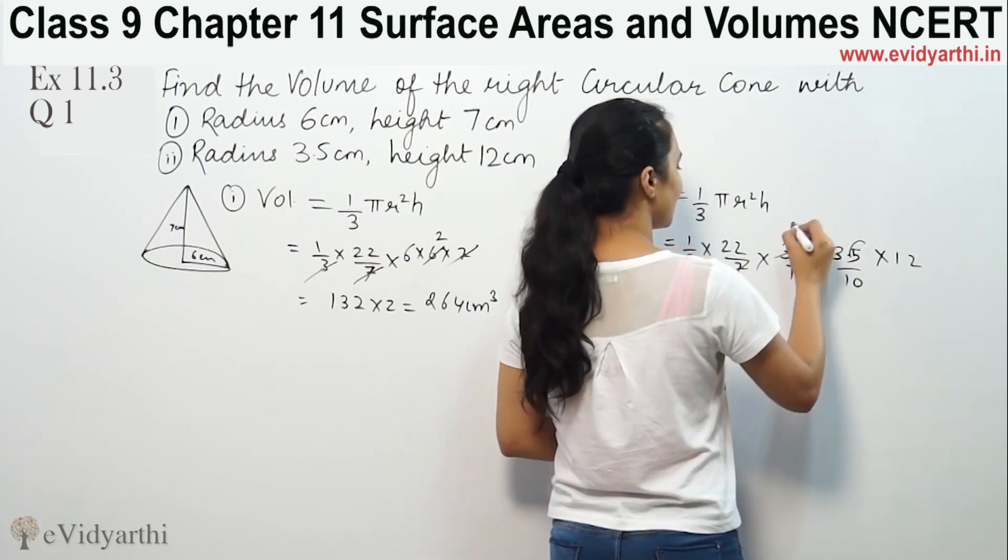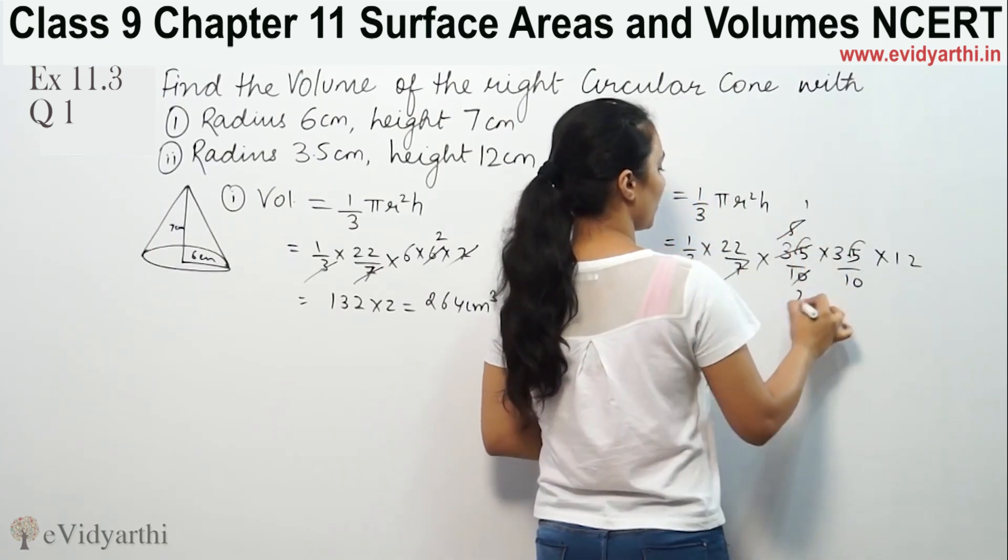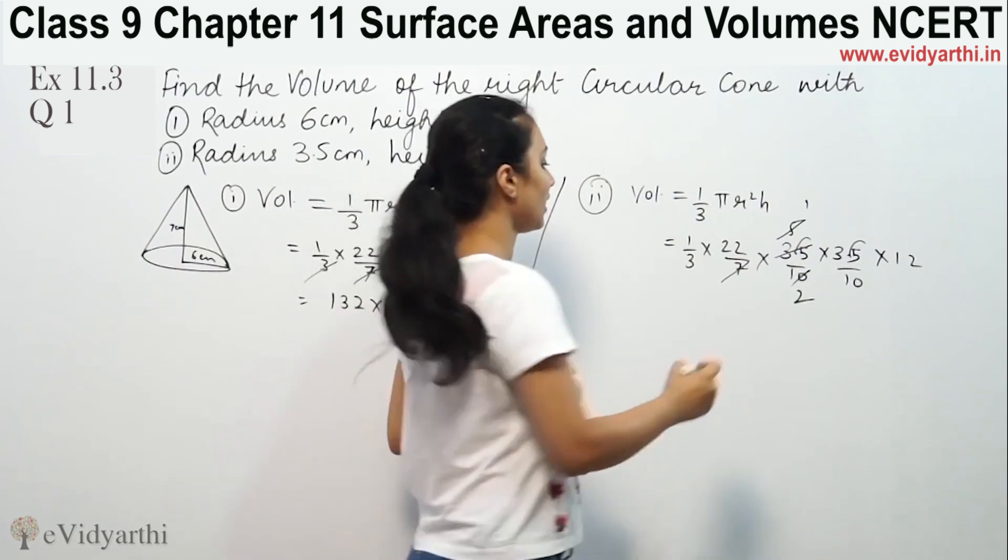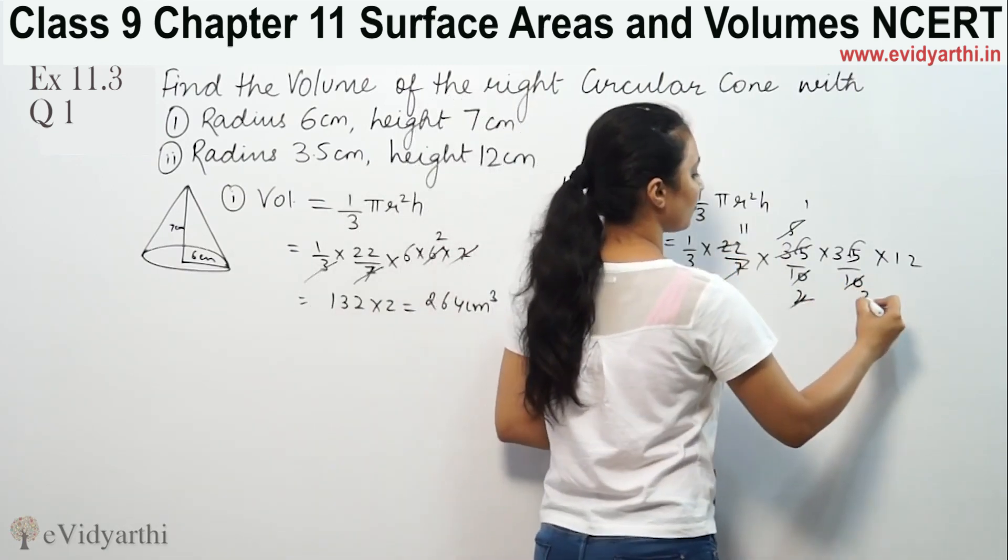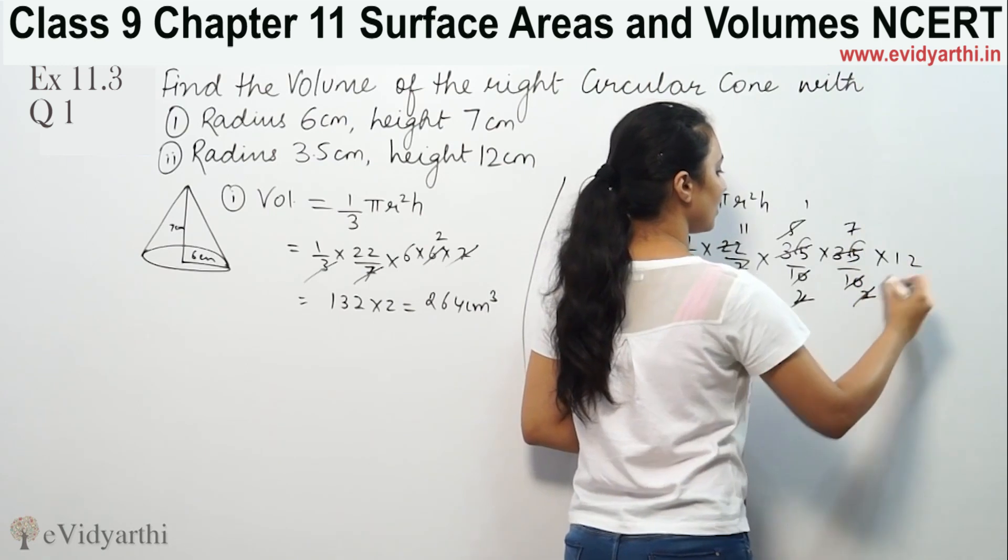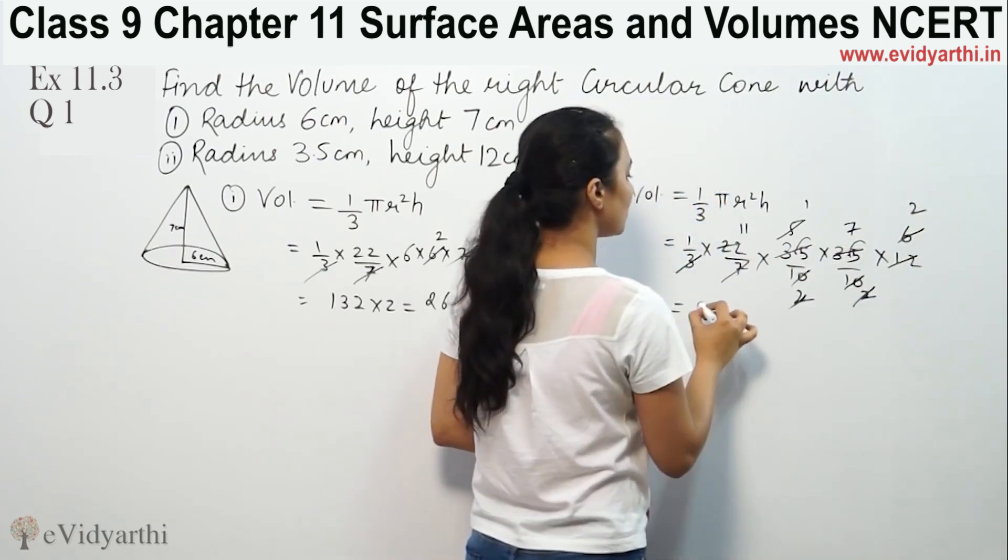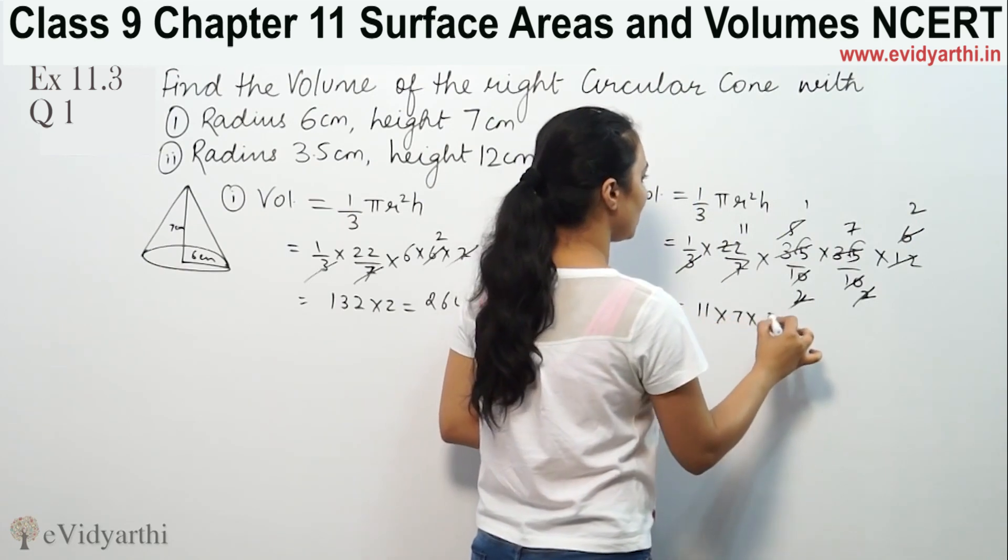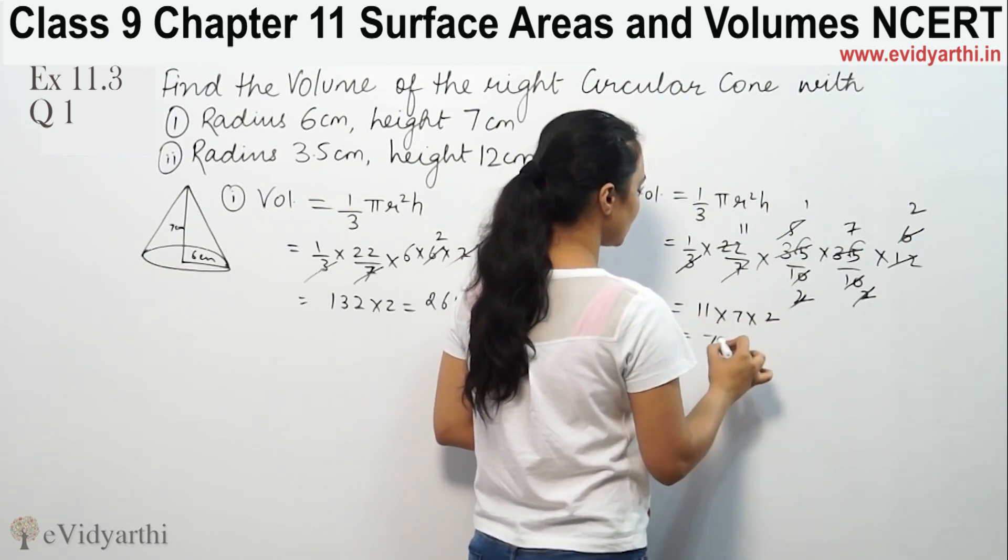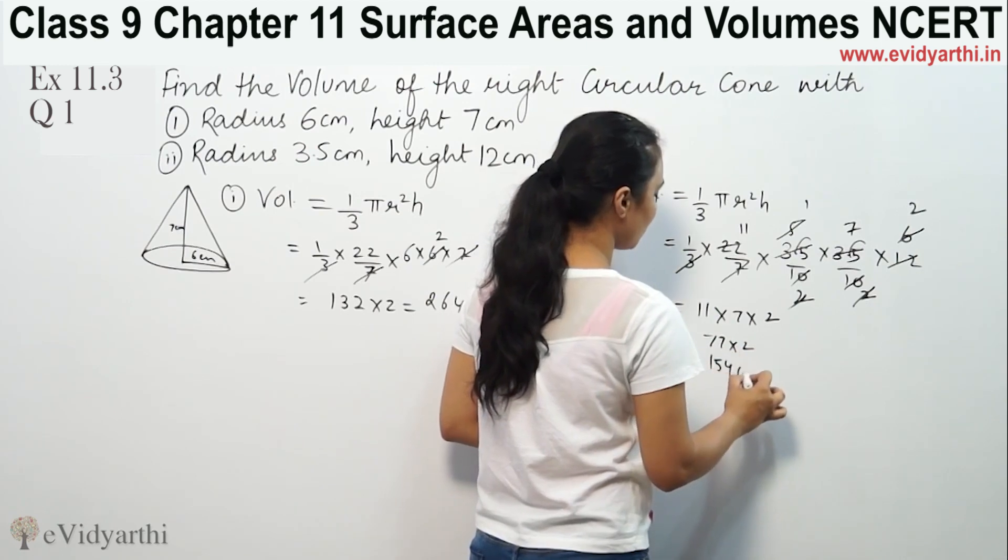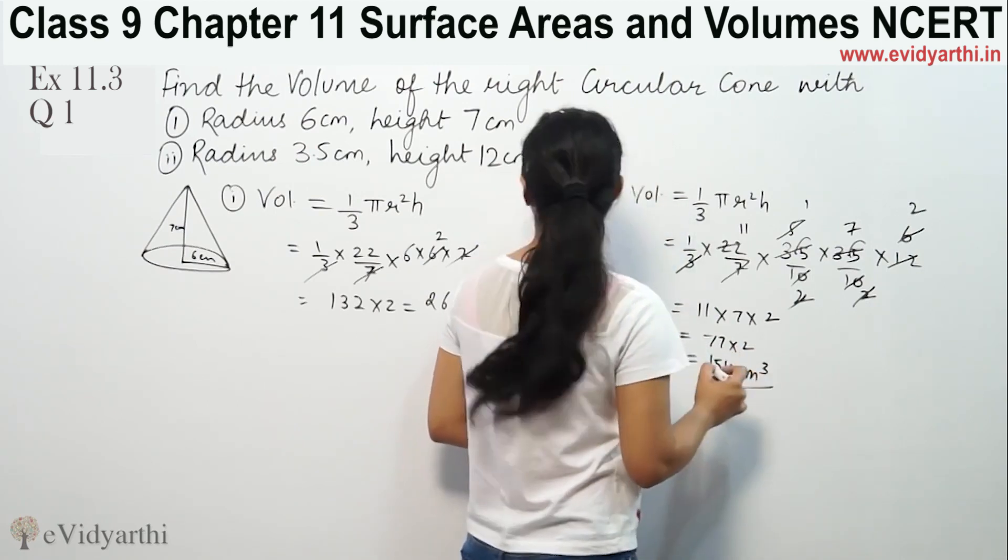7 and 7 cancel, 5 and 5 cancel, 2 and 2 cancel, 11 remains, 5 and 2 remain, 2 and 6 remain, 3 and 2 remain. So 11 × 7 × 2, this is 77 × 2 which equals 154 cm³.